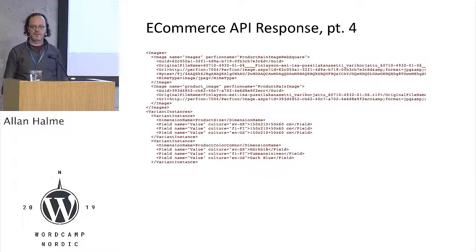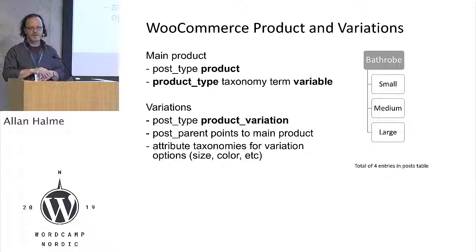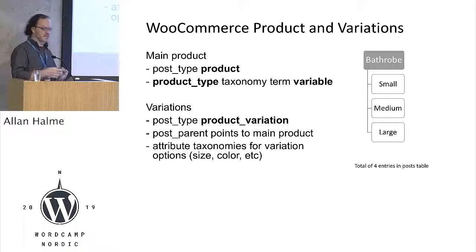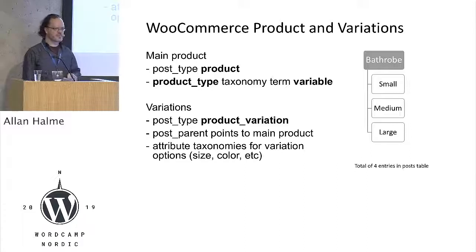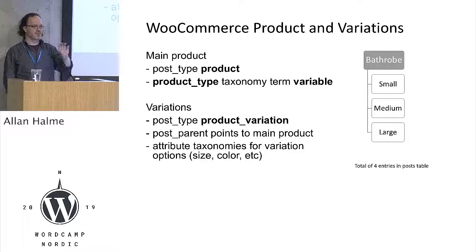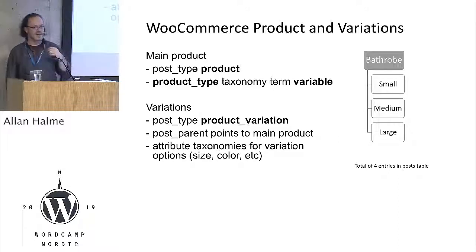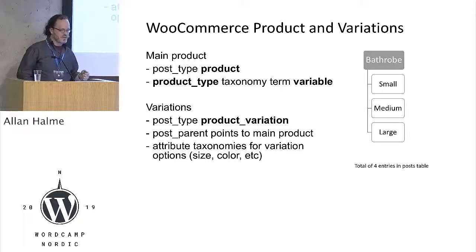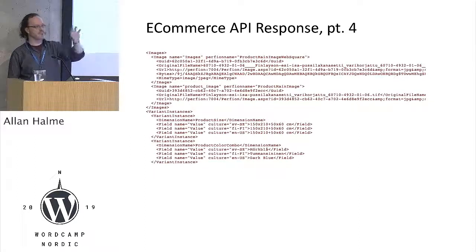Now we need to put this information into the store. WooCommerce works as an extension of WordPress where a main product like 'bathrobe' is a custom post type. There are taxonomy terms which identify what kind of product it is — simple, grouped, variable, or external. In our case it's always variable: bathrobe in three sizes and three colors, or a pillow in two sizes. The variations are also a custom post type, with their parent post ID indicating where they belong, and further taxonomies indicate size and color.